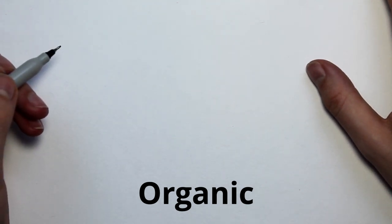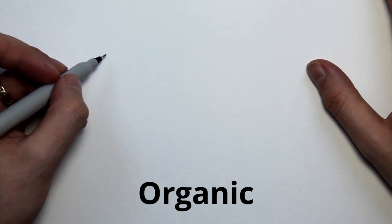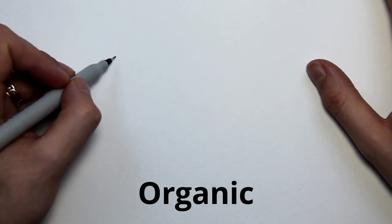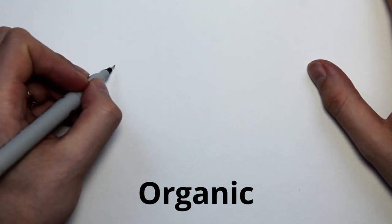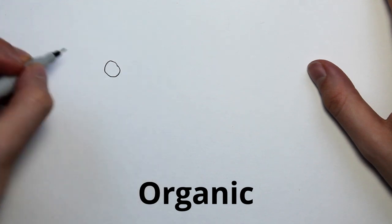Last week we were looking at line, the first of the visual elements. Shape can be described as a two-dimensional area that is created when the ends of lines are joined together to create a closed area.